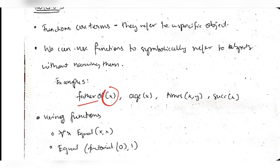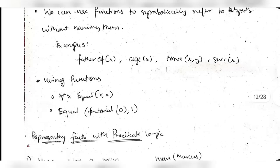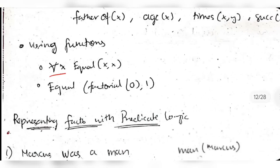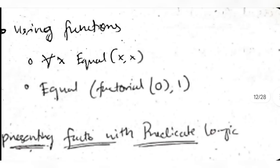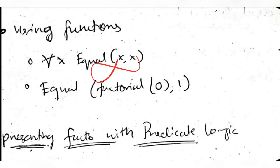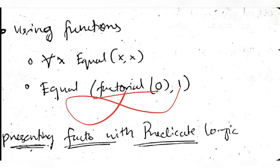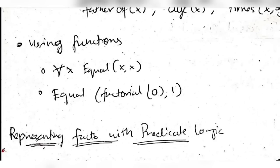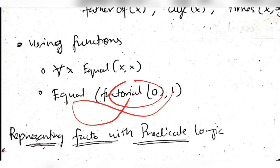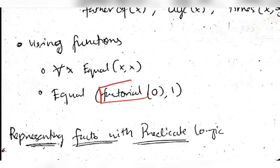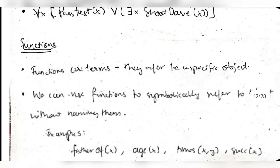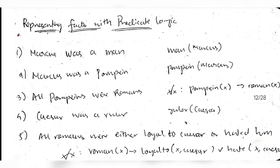Function examples: ∀x equal(x, x) means 'for all x, x equals x' - obviously true. equal(factorial(0), 1) represents 'factorial of 0 equals 1,' which is true. That is how you represent what function is to be performed and its value using predicate logic notation.